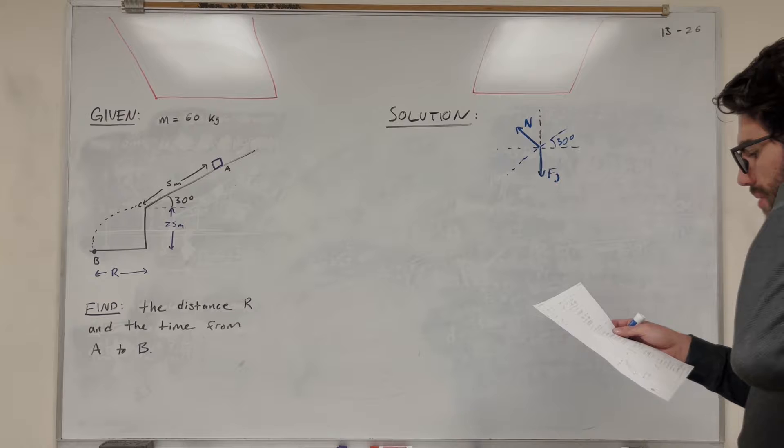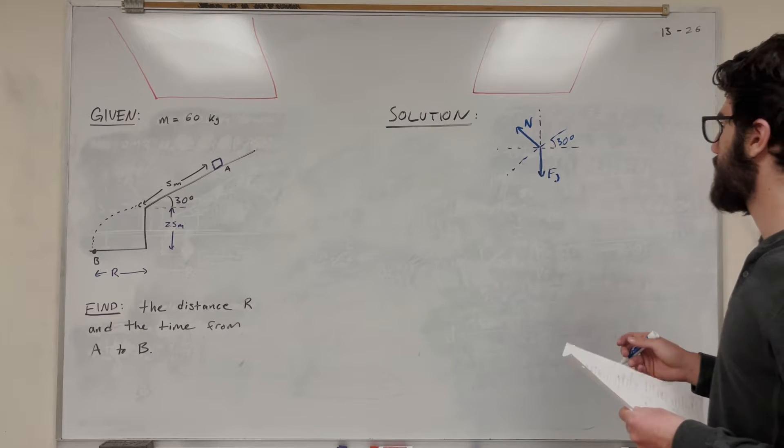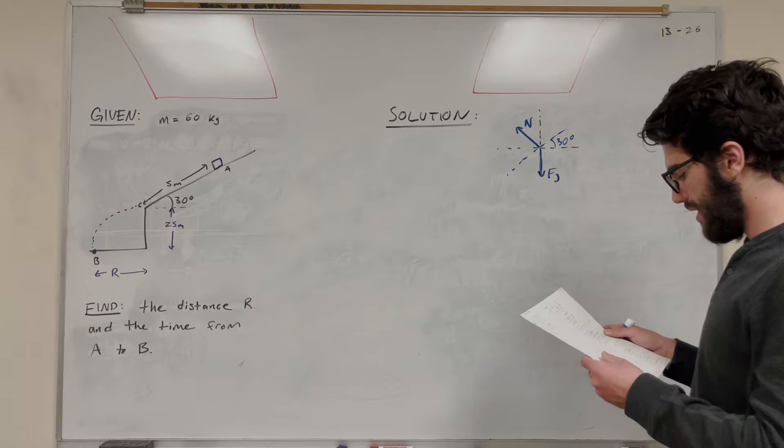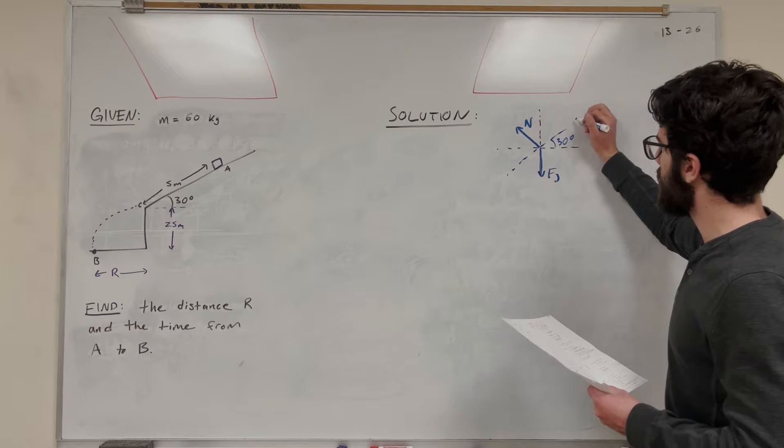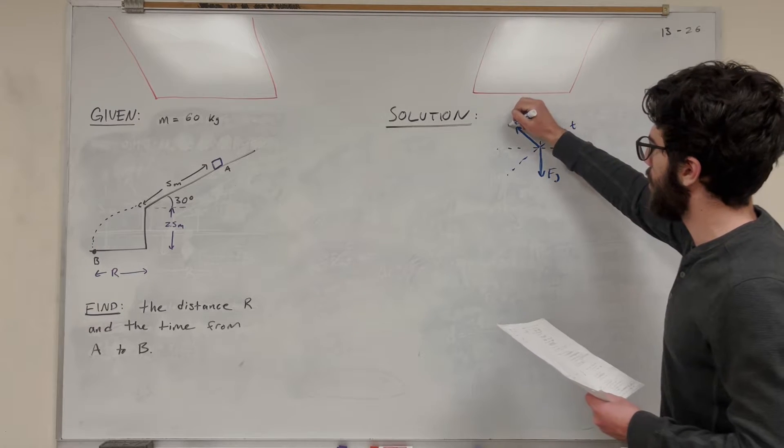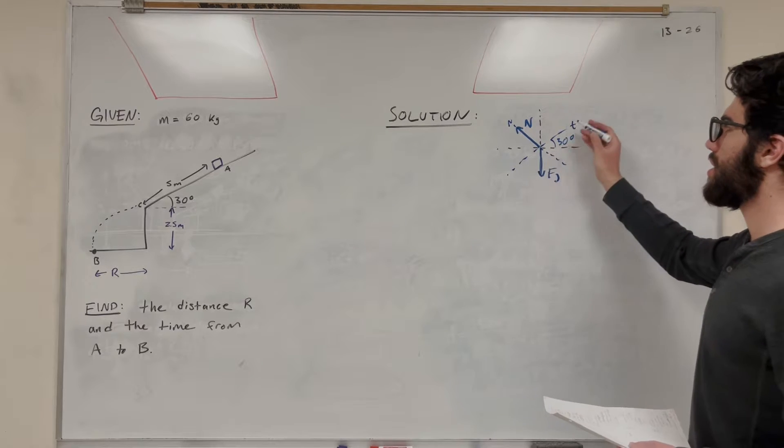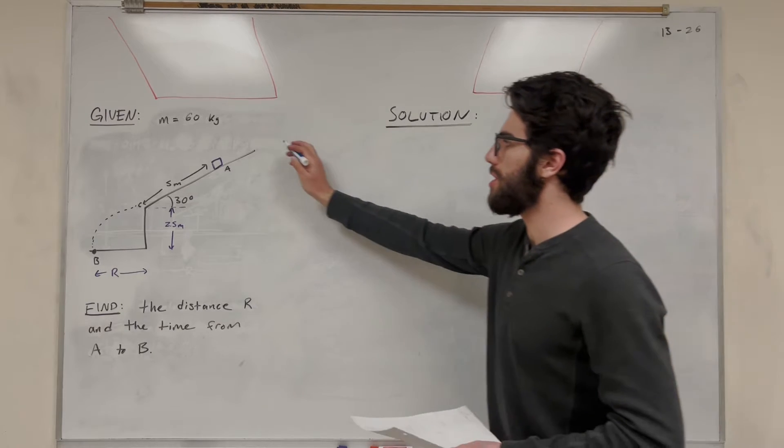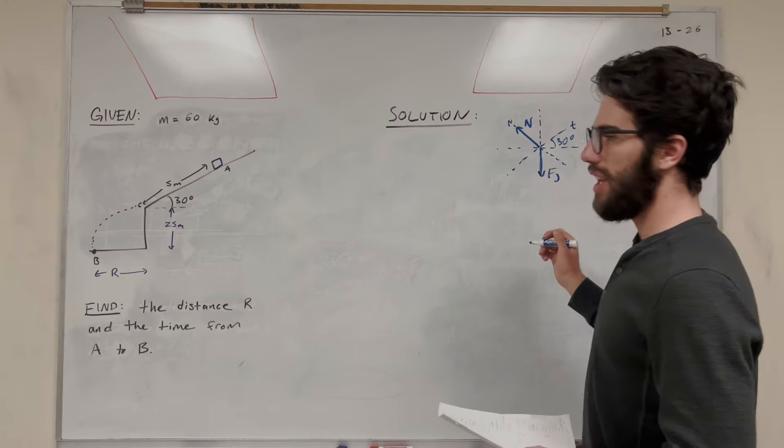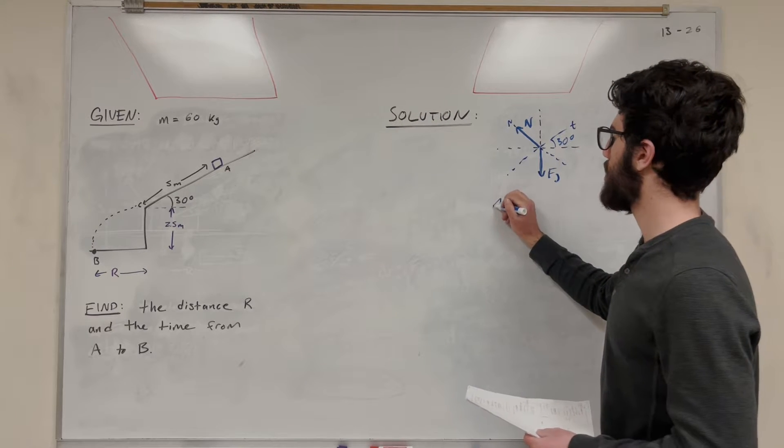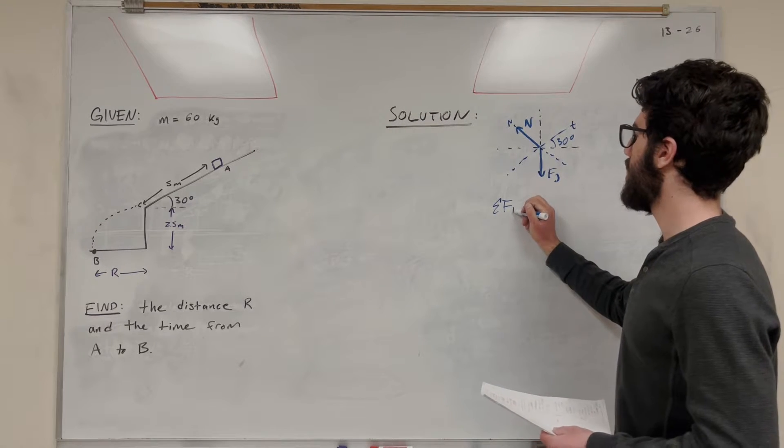So how are we going to solve for this? Let's take sum of the forces in the x direction. We're going to look at this angle. This is going to be tangent, and this is going to be normal. So we're interested in the tangent direction, which is basically the direction down the ramp.